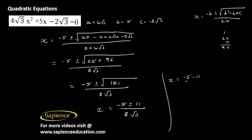This gives us minus 5 minus 11 by 8 root 3, which is minus 16 by 8 root 3, or minus 5 plus 11 by 8 root 3, which is 6 by 8 root 3. Let's cancel the common terms.